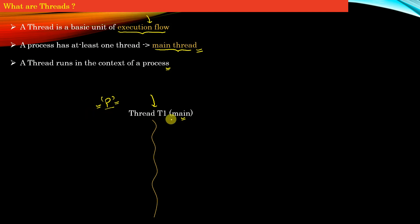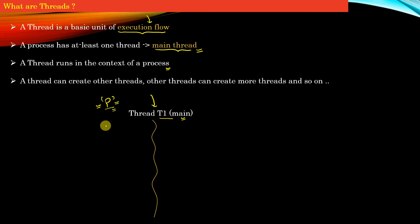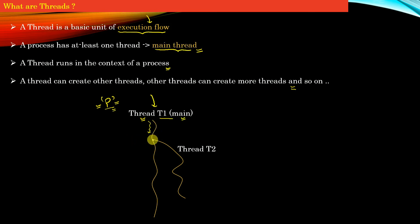To create a thread you have to create a process first, and a process has at least one thread called the main thread. A thread can create other threads, those threads can create more threads, and so on — there is no limitation. The creation of the first thread starts from the main thread. At some point F in the main thread, it creates another thread called T2, and after that point a new independent execution flow is created.